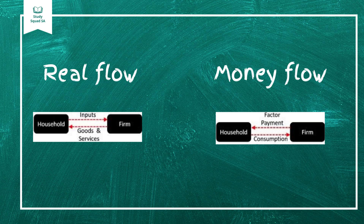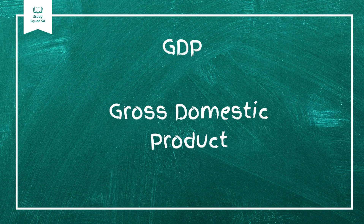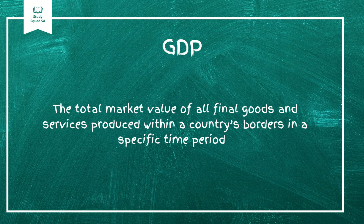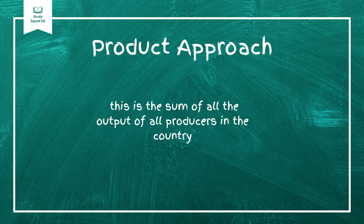Now let's dive into GDP, or Gross Domestic Product — one of the most important indicators of an economy's health. GDP is the total market value of all final goods and services produced within a country's borders in a specific time period. There are three ways to calculate GDP. Number one: the product approach, which adds up the value of all goods and services produced.